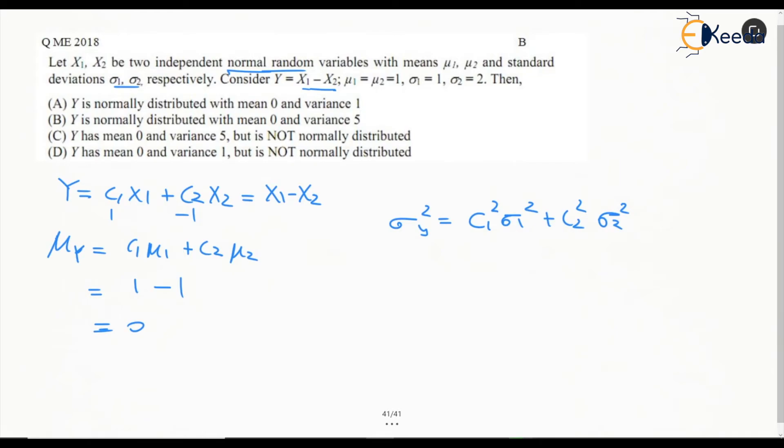For the variance, c1 is 1 and sigma 1 is given as 1, so this is 1 squared. c2 squared, so minus 1 squared will become 1, and sigma 2 is 2, so this is 2 squared. This becomes 1 plus 4 equals 5.